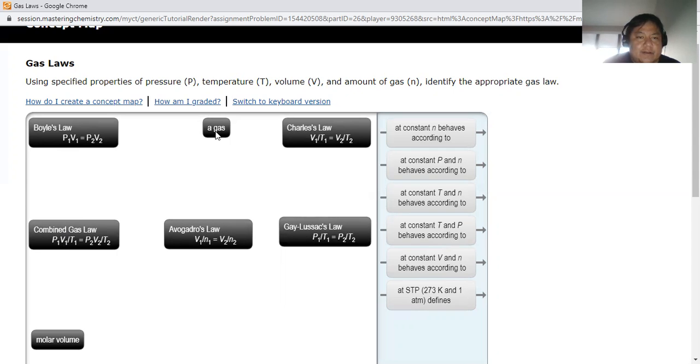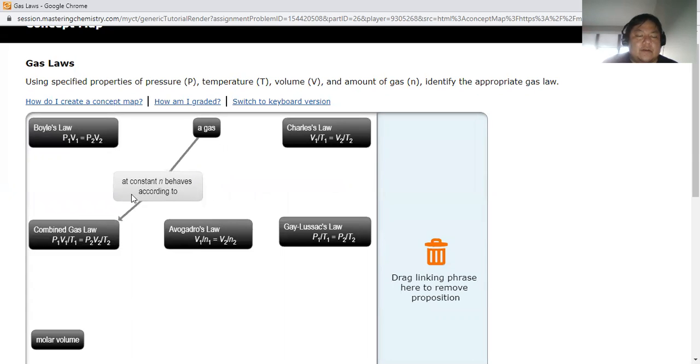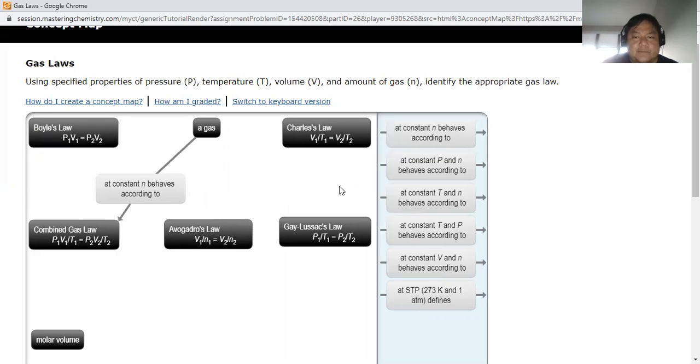All right, so then we're going to put gas right here in the middle. Let's think about 'at constant n behaves according to.' Which one of these gas laws as shown does not have n? Boyle's Law has PV, but they're also not showing temperature. But if I look at Combined Gas Law, that has pressure, volume, and temperature. R is a constant that's always constant, but n is my only unknown that can fluctuate. So I'm going to put that there.